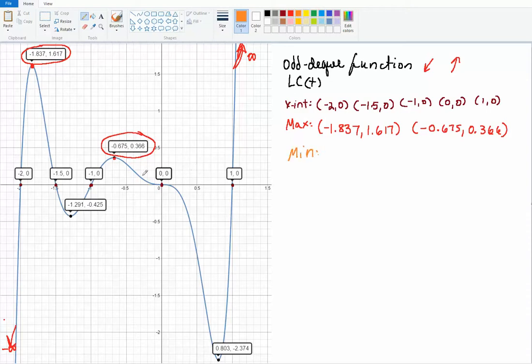Now, let's say that I was interested in the minimums. Well, where does the curve hit a minimum? Well, it hits a minimum here, so it would be this point right here, and it hits a minimum over here as well. So how would you report them? Negative 1.291, negative 0.425. And the other one would be 0.803, minus 2.374.